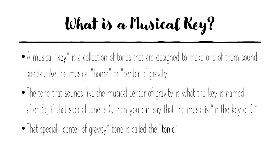A musical key is basically a collection of tones or sounds that are designed to make one of them in particular sound special, like a musical home or a center of gravity. That tone that sounds like the musical center of gravity is what the key is named after. So if that special tone is C then you can say that the music is in the key of C. That special center of gravity tone is called the tonic.